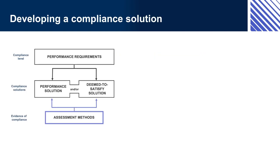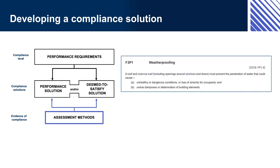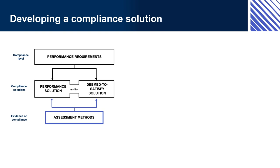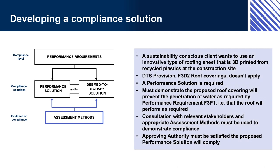Developing a compliance solution — Performance requirement F3P1, Weatherproofing: The roof must prevent the penetration of water that could cause damage. This applies to the roof of all buildings of all classes and doesn't say how compliance must be achieved — you may use a DTS solution, a performance solution, or a combination. For a performance solution: a sustainability-conscious client wants to use an innovative type of roofing sheet that is 3D printed from recycled plastics at the construction site. DTS provision F3D2 (roof coverings) doesn't apply, so a performance solution is required. The designer must demonstrate that the proposed roof covering will prevent the penetration of water as required by F3P1.